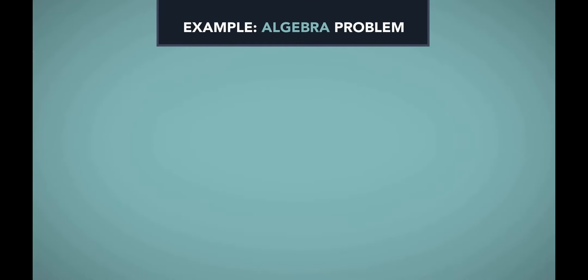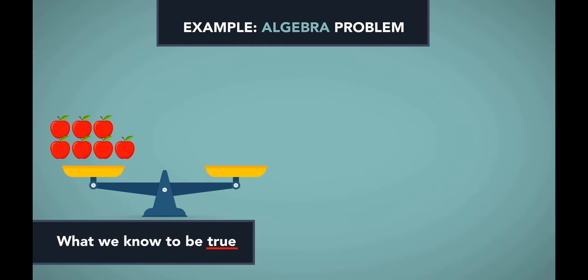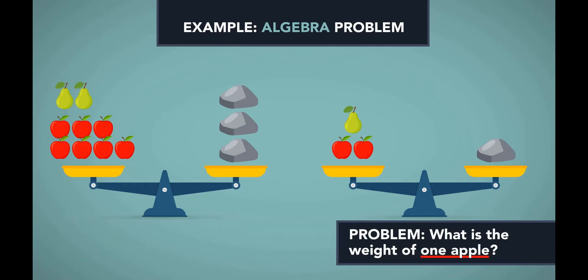Now compare this problem to the following problem. Suppose that seven apples and two pears balance with three stones. We also know that two apples and one pear balance with one stone. The problem is to find the weight of one apple from this information. This is an algebra problem.